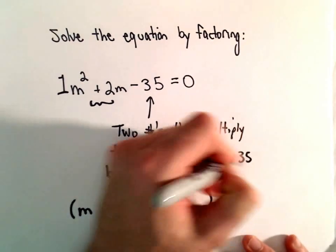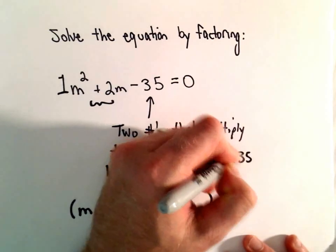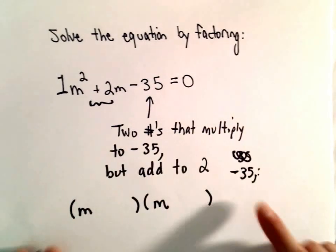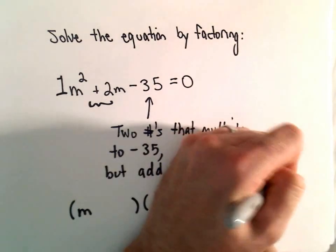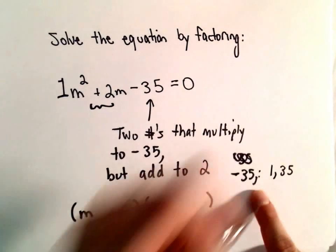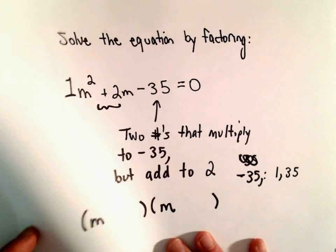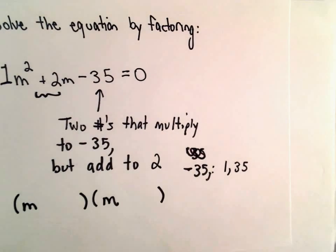Okay, to get negative 35, we could use some combination of 1 and 35. One of them will have to be positive, one will have to be negative. But in either case, I don't see how that's possibly going to add up to positive 2.